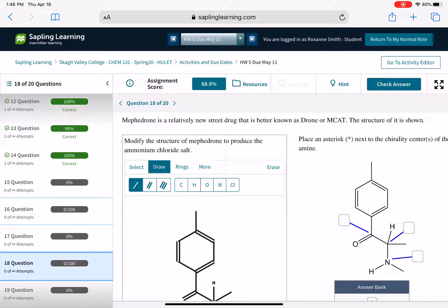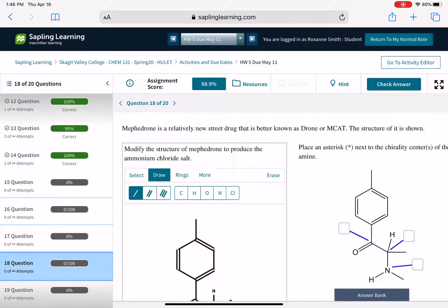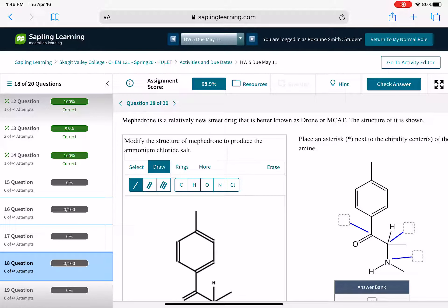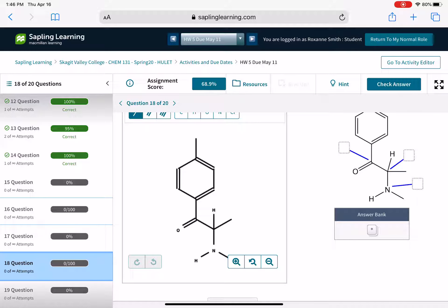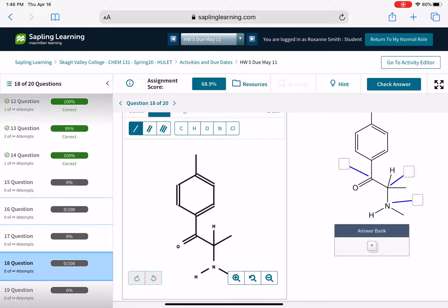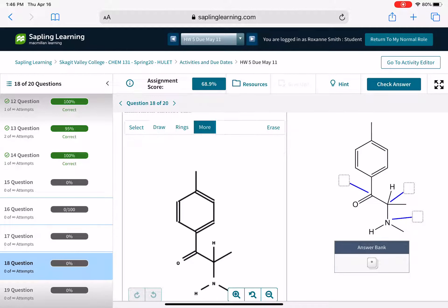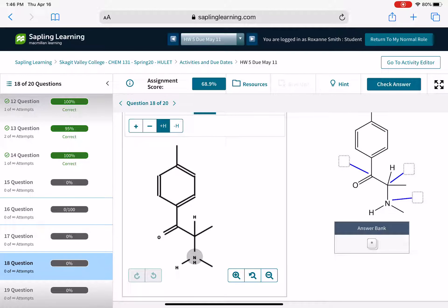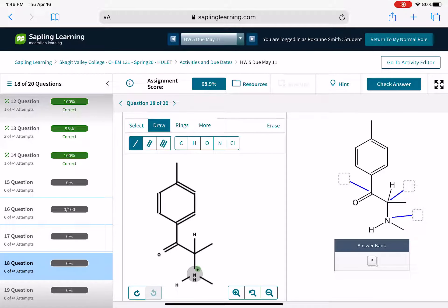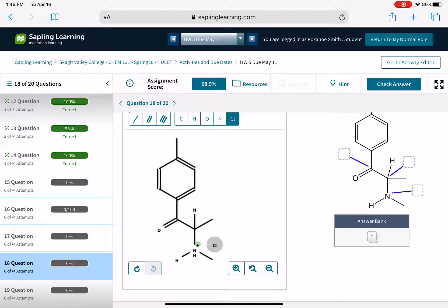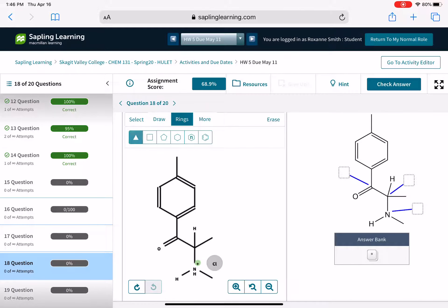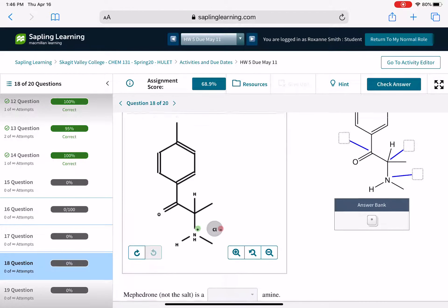And then for question 18, so again, more modifying the structure. This one is just a little bit trickier. It says modify the structure to produce the ammonium chloride salt. So that means that we need to first modify the structure by giving another hydrogen to that nitrogen. And we also need to give it a positive charge. And we need to draw the counter ion. The problem tells us it's chloride. So we're getting that info from the name. Do not forget that guy. Chloride needs a negative charge.